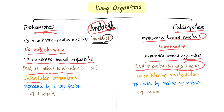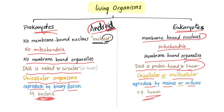Prokaryotes are unicellular. Eukaryotes can be unicellular or multicellular. Prokaryotes reproduce by binary fission; eukaryotes reproduce by meiosis or mitosis. Examples of prokaryotes are bacteria; an example of eukaryotes are human beings, such as you.